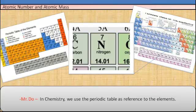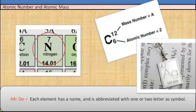In chemistry, we use the periodic table as reference to the elements. Each element has a name and is abbreviated with one or two letters as the symbol.